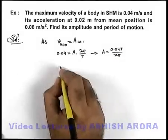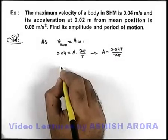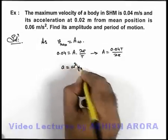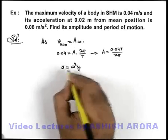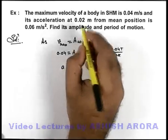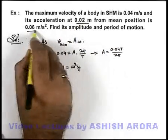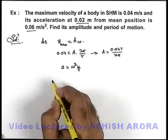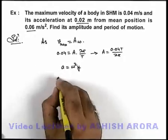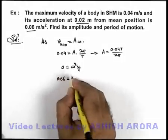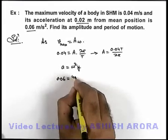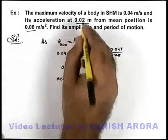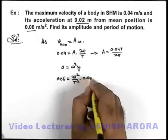We know that acceleration of particle at any position can be given as omega square y in magnitude. So we are given that at 0.02 meter acceleration is 0.06 meters per second square. If we substitute acceleration to be 0.06, is equal to omega square which can be written as 4π² by T² into the displacement, which was 0.02.